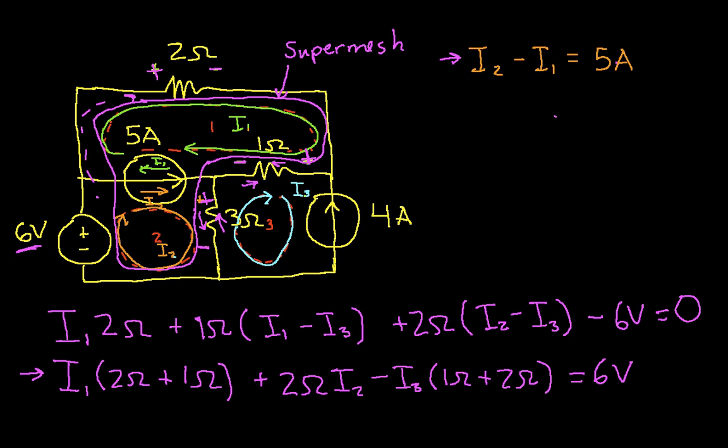The last thing to do is look at mesh 3. Now, you'll notice with mesh 3, I've defined my mesh current I3 like this. And you'll notice that this 4 amp current source only has one mesh current going through it. So, what this tells me directly is that I3 is negative 4 amps. Because I3 is the only virtual current, mesh current, going through the 4 amp source, and they're going in opposite directions. So, I know that I3 has to be negative 4 amps. So, that then completes step 2.